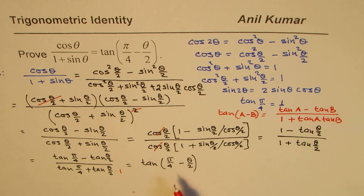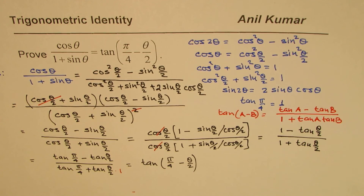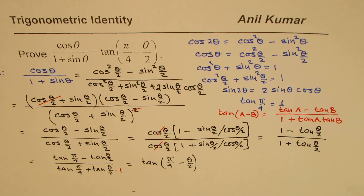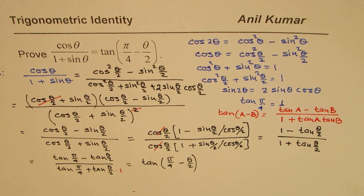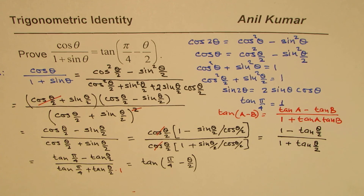That is how we prove that the given expression equals tan(π/4 minus θ/2). We are going to use this identity in substitution methods for finding derivatives of trigonometric inverse functions. I'd like you to understand this and a few other videos before getting into differentiation of trigonometric functions. I'm Anil Kumar — please share and subscribe. Thank you and all the best.